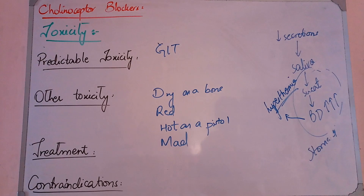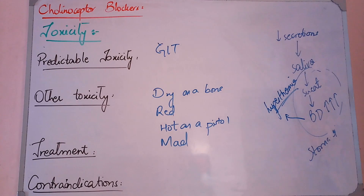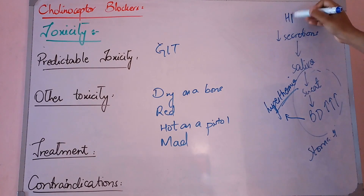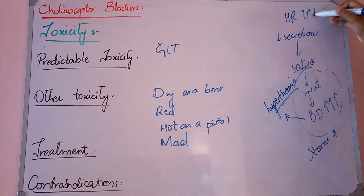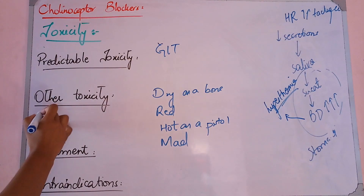We have another effect. Predictable toxicity includes constipation and blurring of vision. Regarding heart rate: the parasympathetic system normally decreases heart rate. When we block the parasympathetic system, heart rate increases — tachycardia. At moderate toxicity levels, tachycardia will occur. The other toxicities also include CVS effects.